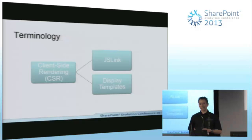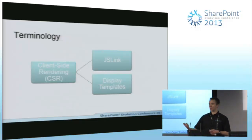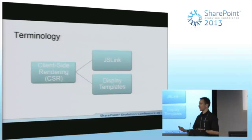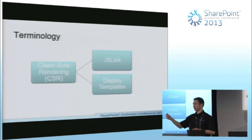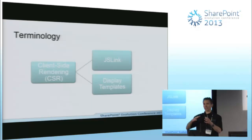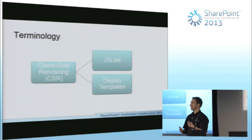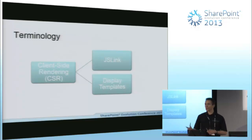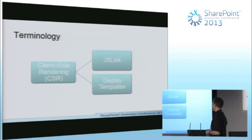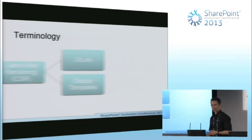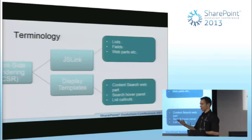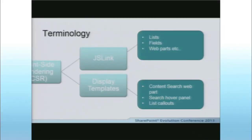This could come under two subcategories. You could talk about JSLink — lots of things in SharePoint have a new property called JSLink. We use this to specify a link to a JavaScript file, where we specify exactly how we want the output to appear. This could be used in things like a certain list or a certain field. The other subcategory of client-side rendering is display templates, which get used in the content search web part, in the search hover panel, and so on.